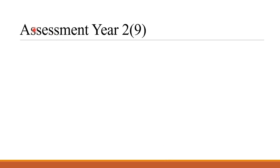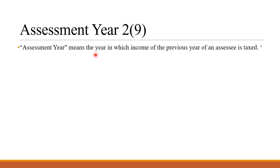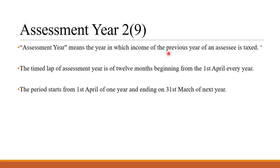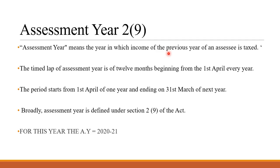The next concept is the assessment year under section 2 subsection 9. Assessment year means the year in which the income of the previous year of the assessee is taxed. The year in which we are going to calculate tax for the previous year is called the assessment year. The time span of the assessment year is 12 months, beginning from 1st April every year — the period starts from 1st April of one year and ends on 31st March of the next year. For this year, the assessment year will be 2020-21.